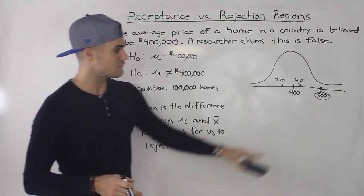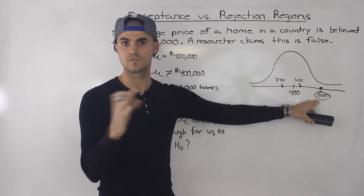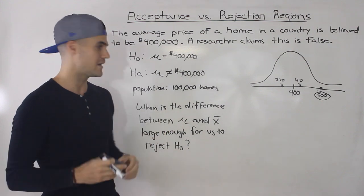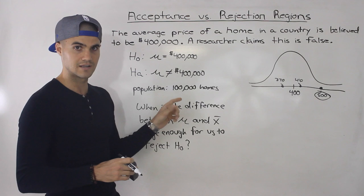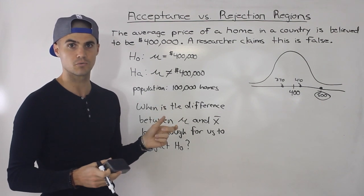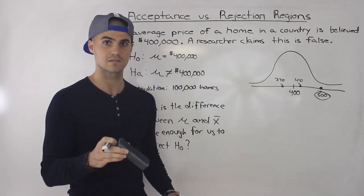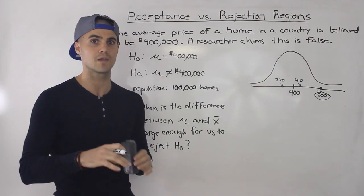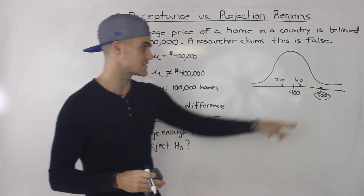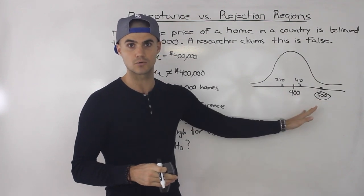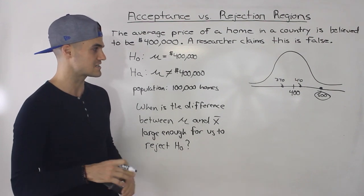But what if that $500,000 came from a sample of only 10 homes? That's not a great representation of 100,000 homes — 10 out of 100,000 is a small sample to feel confident enough to reject the null. What if there's sampling bias? Maybe you looked at homes in a richer area, so obviously the average would be higher. So it's kind of subjective — there are a lot of factors to consider.